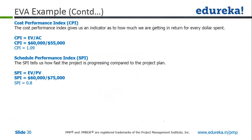We will calculate your cost performance index (CPI) and schedule performance index (SPI). The formula for CPI is earned value divided by actual cost, and the calculated value is 1.09. Any value greater than 1 is good news — your CPI of 1.09 means you are spending less than what you had planned for. Your SPI, using earned value divided by planned value, is 0.8. Any value less than 1 is not good news. The benchmark for both CPI and SPI is 1: less than 1 is bad, equal to 1 means you are on track, and greater than 1 means you are ahead of schedule.